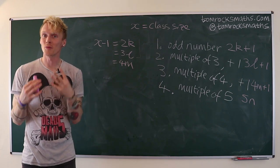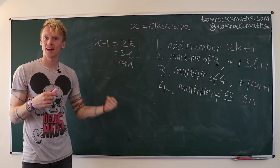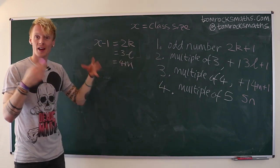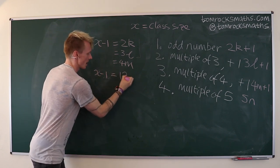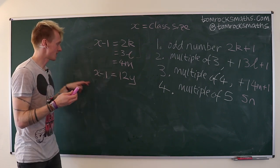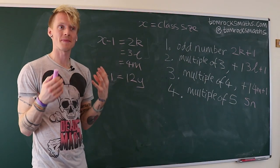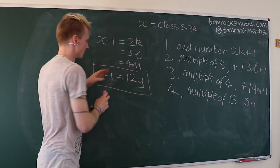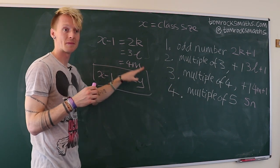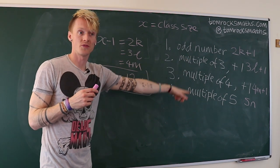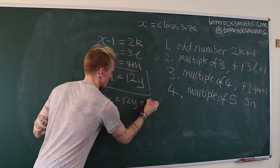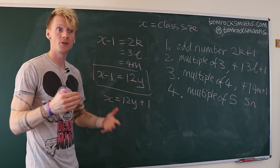Thinking algebraically, we want to write down an equation representing that x minus one is divisible by twelve. So we must have x minus one equals twelve y, where y is any positive whole number. The final step is to combine this — representing rules one, two, and three — with rule four, which says x must equal five n.